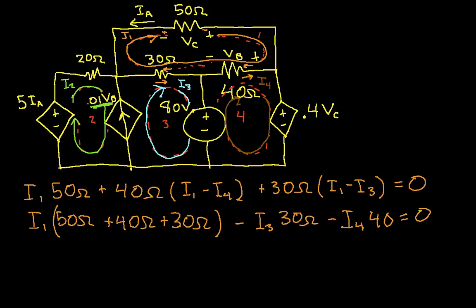So if we look at this dependent current source, we have I2 going this direction, we have I3 going this direction. So we can say then that I3 minus I2 is 0.01 times V sub B. Okay, so V sub B is a voltage, looks like it's over here, that is controlling this current source. And eventually we'll need to have V sub B expressed in terms of our mesh currents I1, I2, I3, and I4.